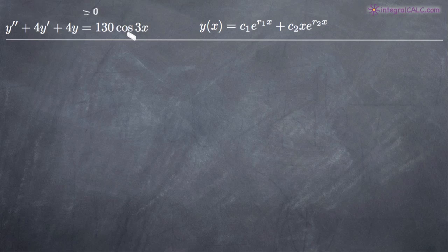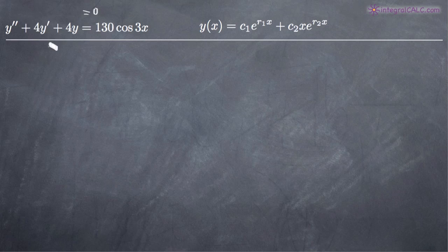We're going to solve this in two steps. The first is we're going to find a general solution based on the left-hand side. Then we're going to find a particular solution based on the right-hand side. So we're going to first ignore the right-hand side completely — pretend that the left-hand side is equal to zero, essentially that it's a homogeneous equation.